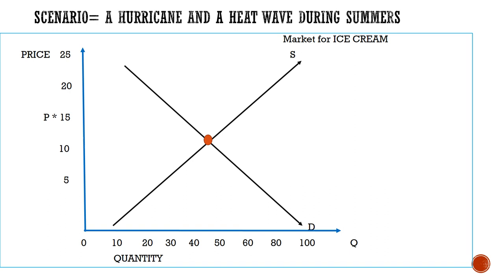There is a hurricane and also a heat wave during summers. Will this affect the demand curve or the supply curve? It will affect both. Let's analyze the market for ice creams. Hot weather alters our preferences — we prefer more ice creams in summer. At any given price, people will prefer to buy more ice creams due to the heat wave, so this will shift the demand curve towards the right.